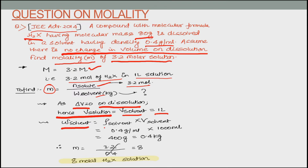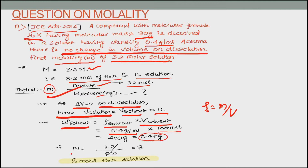Weight of solvent = density × volume = 0.4 g/ml × 10³ ml = 400 g = 0.4 kg. Now, molality = moles of solute ÷ weight of solvent in kg = 3.2 ÷ 0.4 = 8 molal H2X solution. It is very simple if we understand the question well.